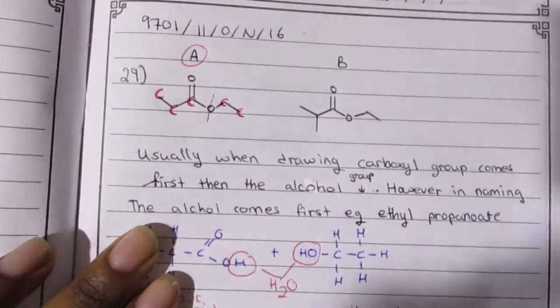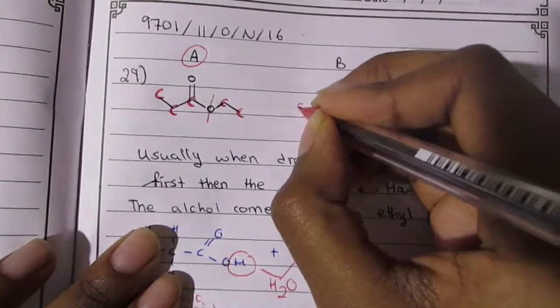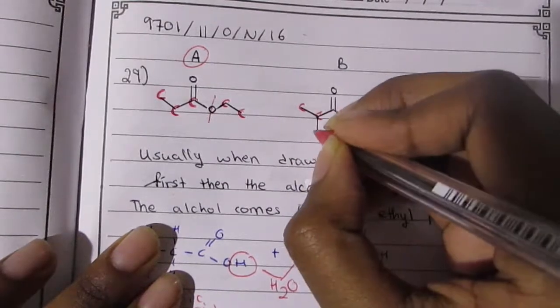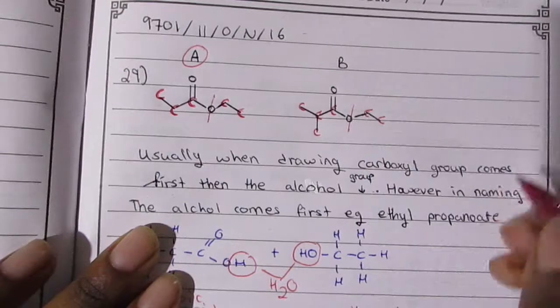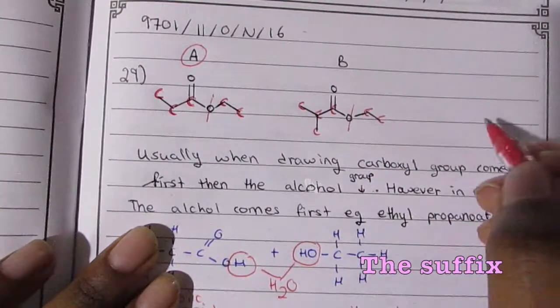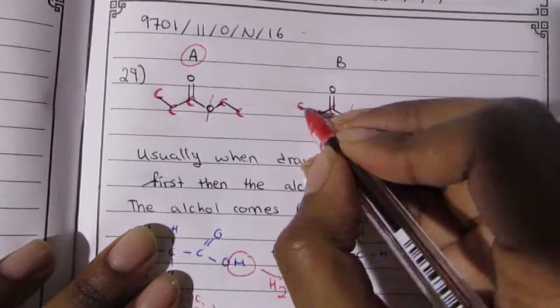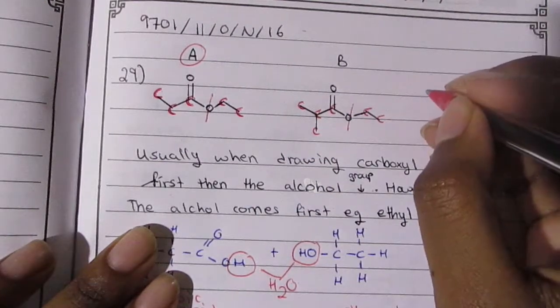For B, the carboxylic acid would be 2-methyl propanoic acid. That's because there is a methyl group on the second carbon. When it comes to naming the final part like propanoic acid or butanoic acid, you're going to take the longest chain, which is the three, and then you have the one carbon on the second.